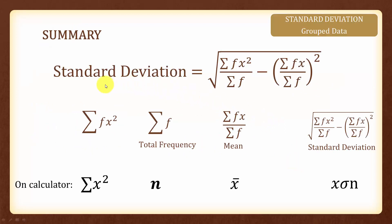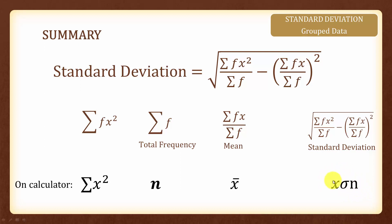In summary, the formula for standard deviation is given by this. The symbol on the calculator for the summation of fx² is shown, the symbol for total frequency is the letter n, and the symbol for mean is also shown. Finally, you can check your answer by finding the standard deviation directly using the corresponding symbol on the calculator. That's all for this topic.